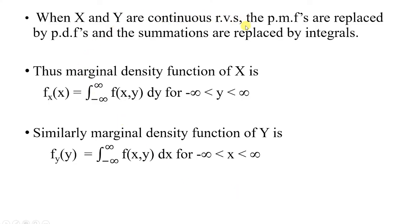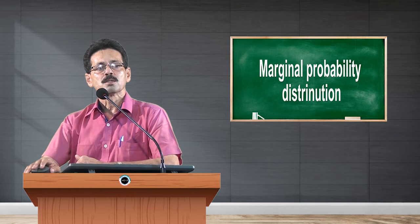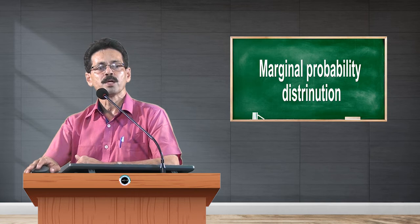When x and y are continuous random variables, the pmf's are replaced by pdf's and the summations are replaced by integrals. Hence, the marginal density function of x is called f(x), defined as the integral of the joint density function with respect to y, where y ranges from minus infinity to plus infinity. Similarly, the marginal density of y is given by f(y), equal to the integral of the joint density function with respect to x, where x ranges from minus infinity to plus infinity.